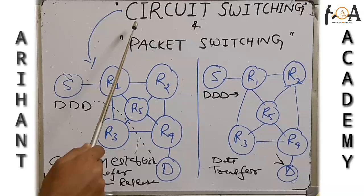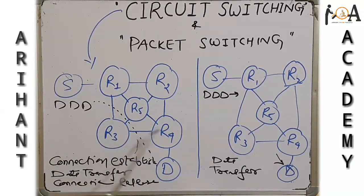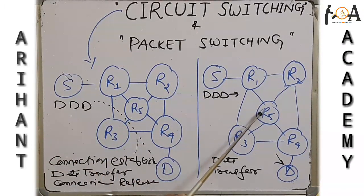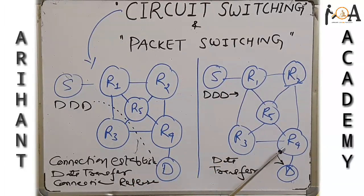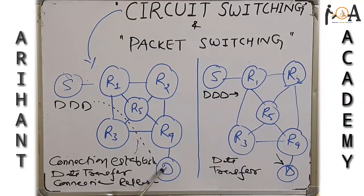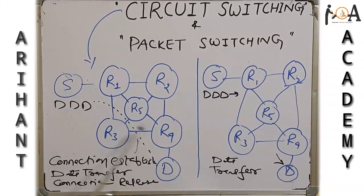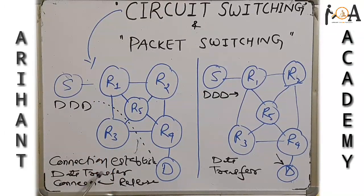In packet switching, the data is directly transferred throughout the network — it finds the path and ultimately sends the data to the destination. There is no connection establishment and no connection release. It is direct data transfer, whereas in circuit switching there is connection establishment, data transfer, and then connection release.